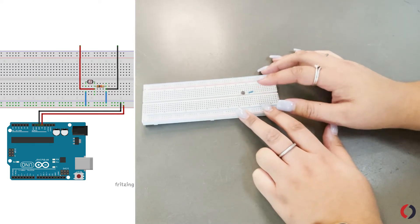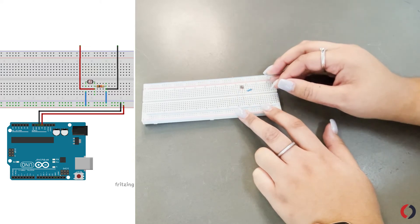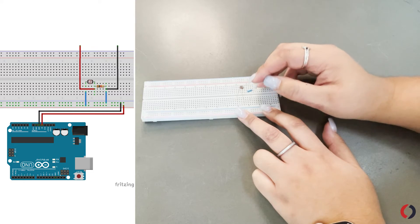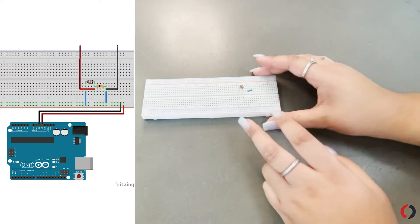Okay, so with this, the light will essentially hit the LDR here and it will make this resistance change. So that's how essentially we're going to log the data.